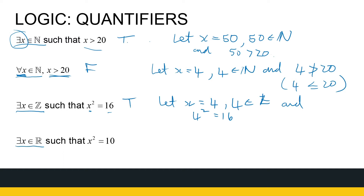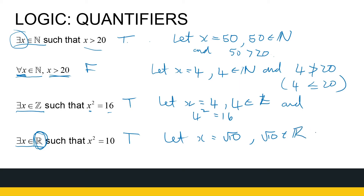The next one: there exists a real number that if I square it, I get 10. The type of numbers are very important here — if that was integer, then I couldn't find one. But I can definitely find a real number to square to get equal to 10. Let x be equal to the square root of 10. That is a real number, and the square root of 10 squared gives me 10. So I can say that statement is true.